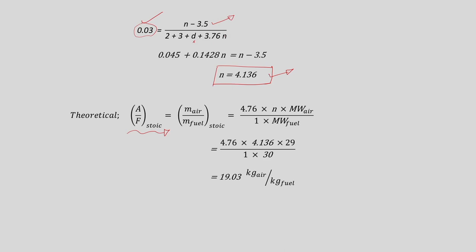The theoretical air-to-fuel ratio considers the exact amount of oxygen required for combustion, as we already discussed in an earlier lecture. It is also called the stoichiometric air-to-fuel ratio — the amount required for the reaction to take place completely.